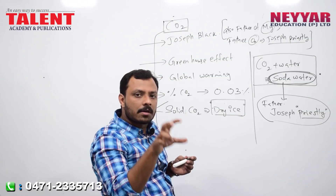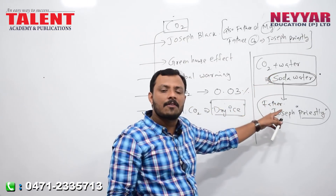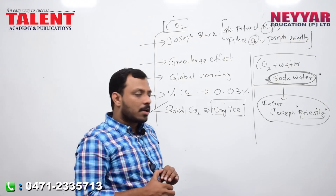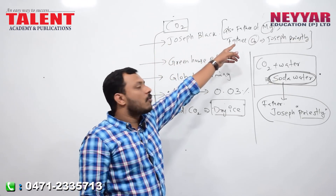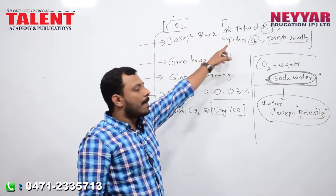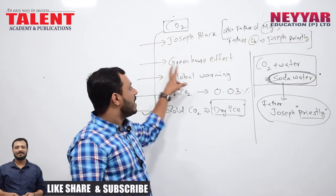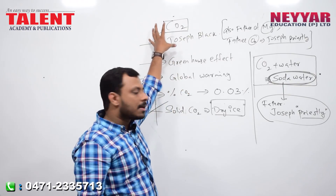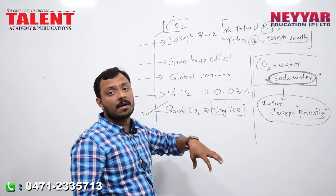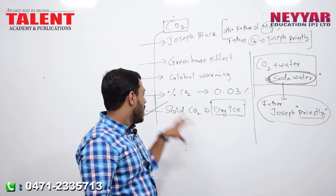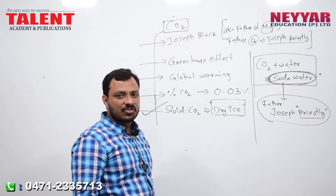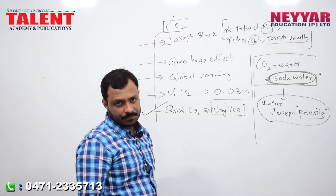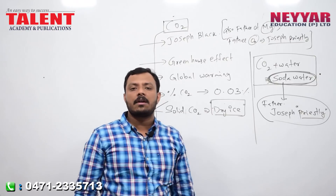Joseph Black is the father of carbon dioxide and also the father of magnesium. Joseph Priestley is the father of soda water. The greenhouse effect is caused by carbon dioxide. The solid CO2 is dry ice, and CO2 plus water equals soda water.